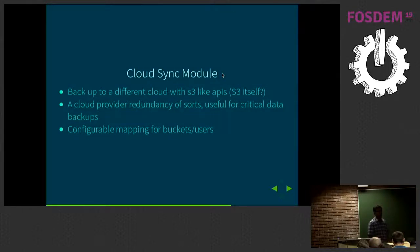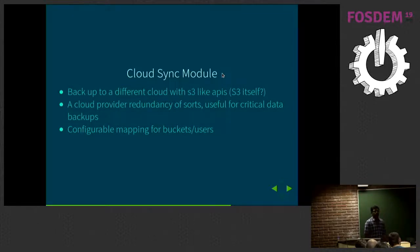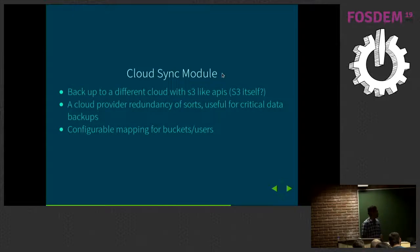The cloud sync module allows multi-cloud redundancy. You can back up your RGW data to a different cloud that supports an S3-like API, like Amazon S3 itself or any other S3-compatible cloud. You can even send data to another RGW without wiring up a full multi-site configuration. There's a configurable mapping for how a user and bucket in this cluster map to the remote S3 or cloud cluster, useful for compliance use cases where you need data backed up to a different provider.